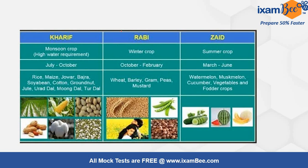Here is a column-wise distribution: Kharif, Rabi, and Zayad. Kharif is the monsoon crop, Rabi is the winter crop, and Zayad is the summer crop. Kharif crops require high water for their growth and cultivation. The timing is generally from July to October. Rabi crops run from October to February, and Zayad from March to May–June.